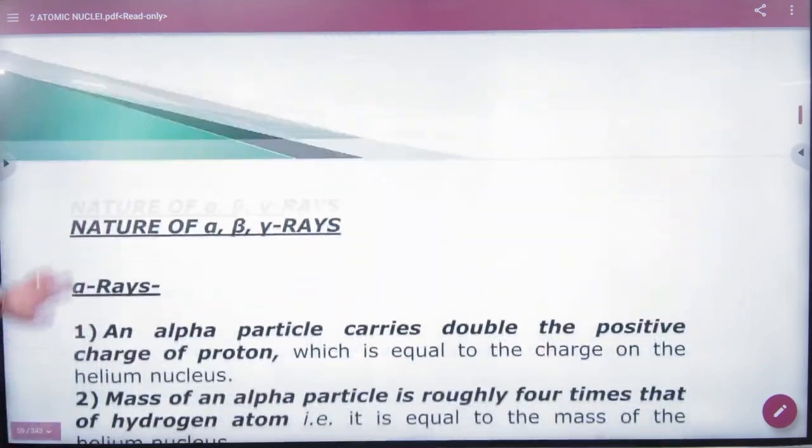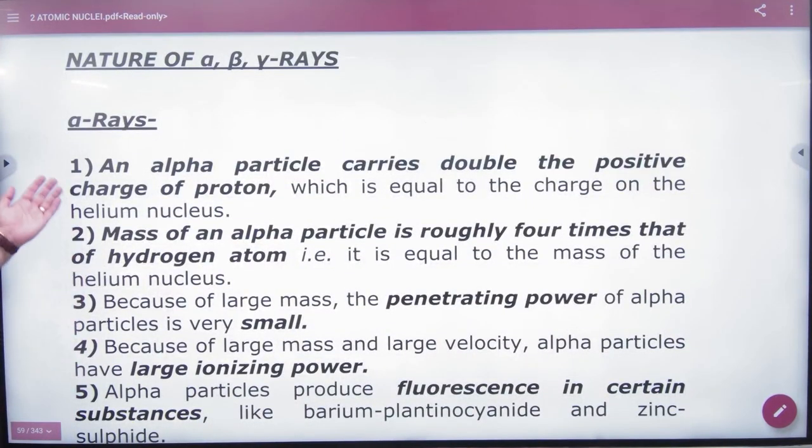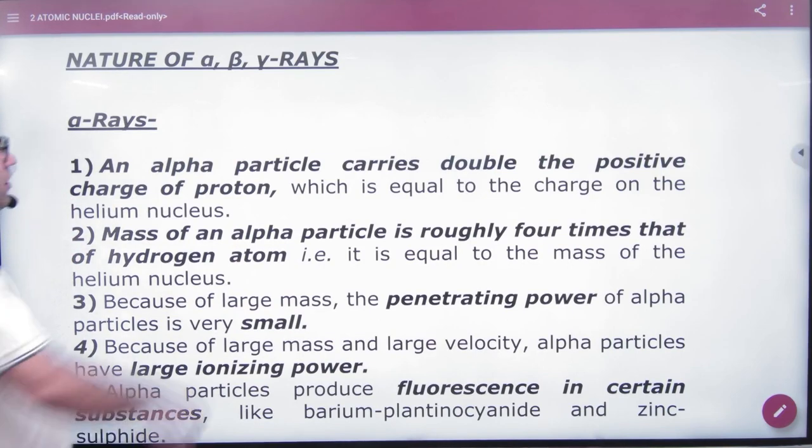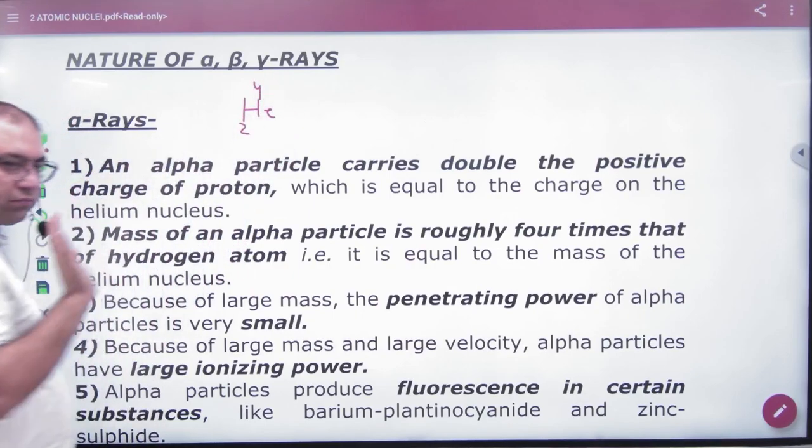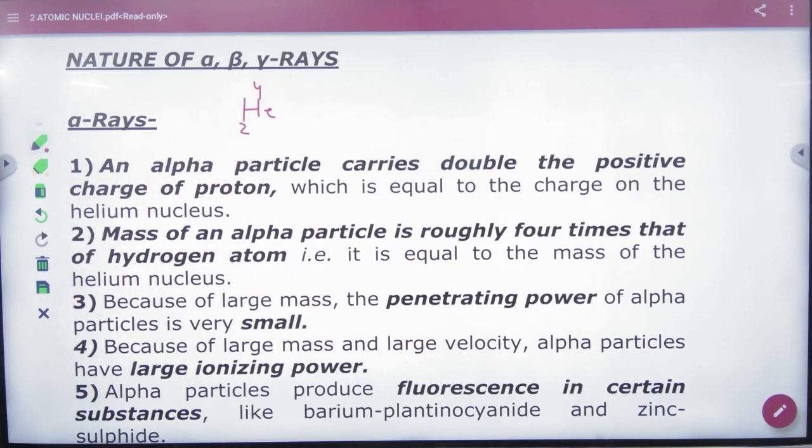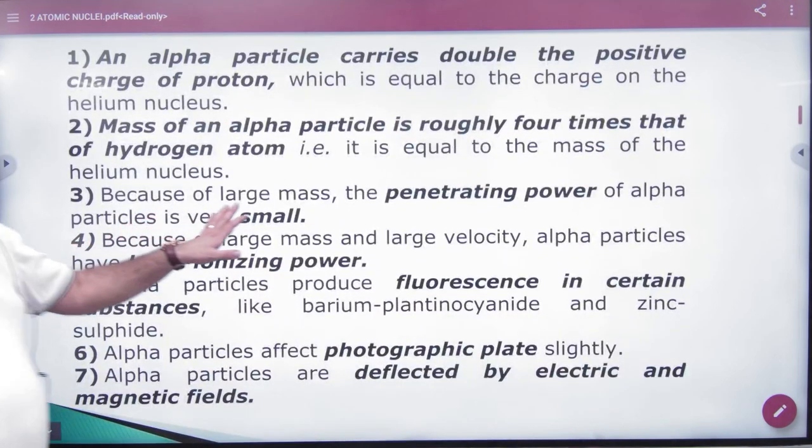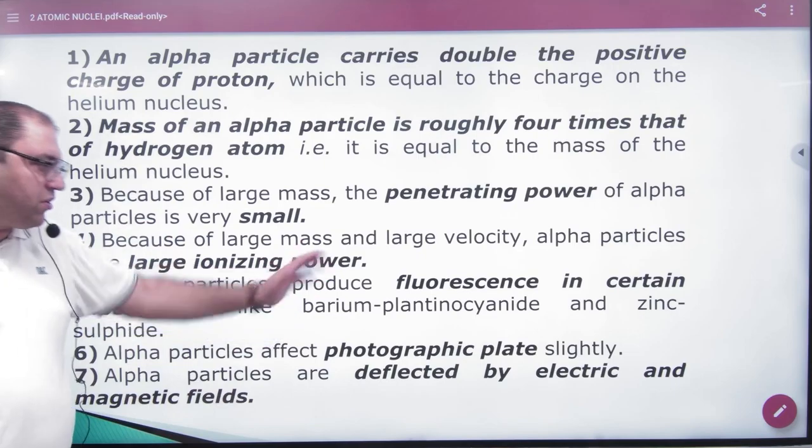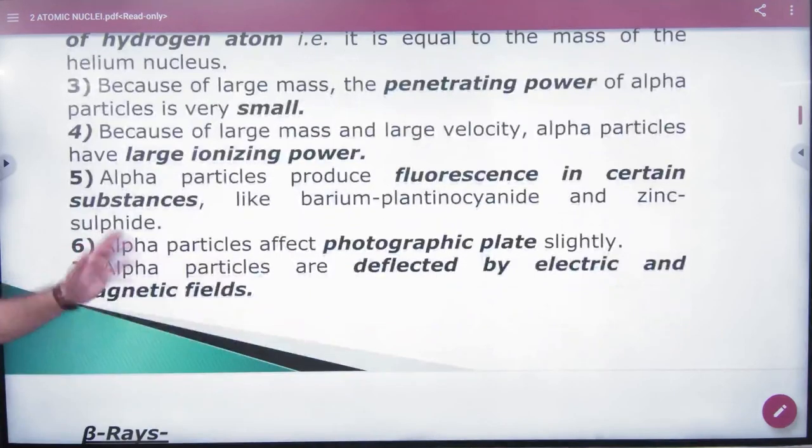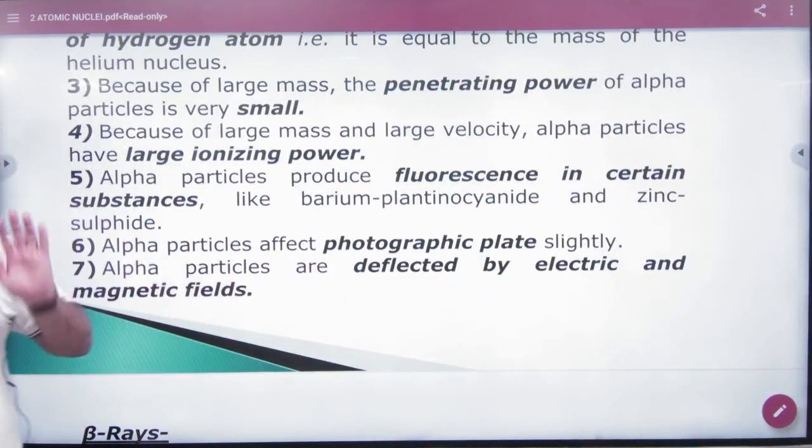Alpha particles have double the positive charge of a proton and mass four times that of hydrogen. An alpha particle is helium-4-2. Because of its large mass, penetration power is low but ionization power is large. It shows fluorescence, affects photographic plates, and is deflected by electric and magnetic fields.